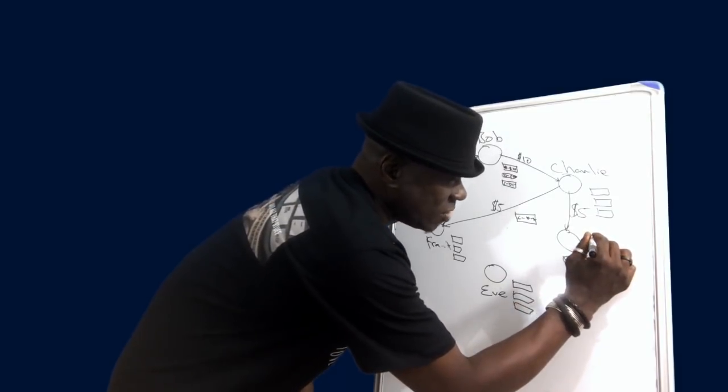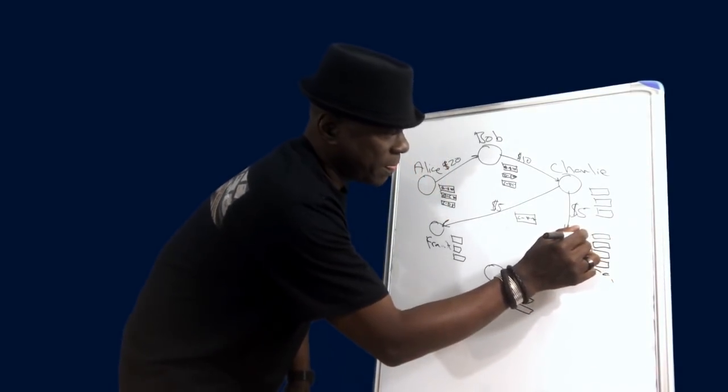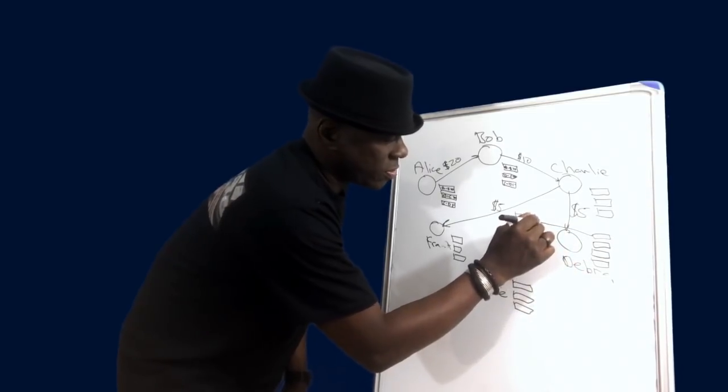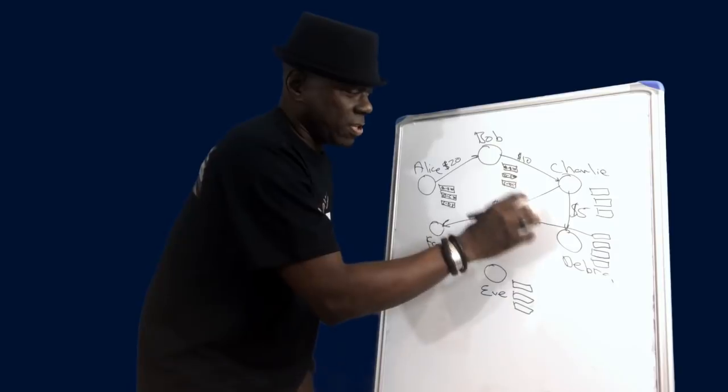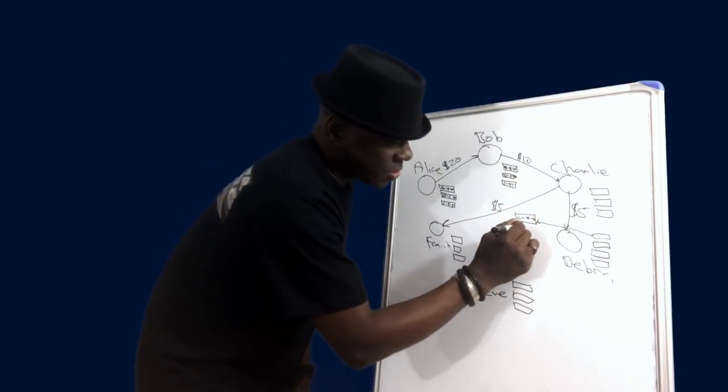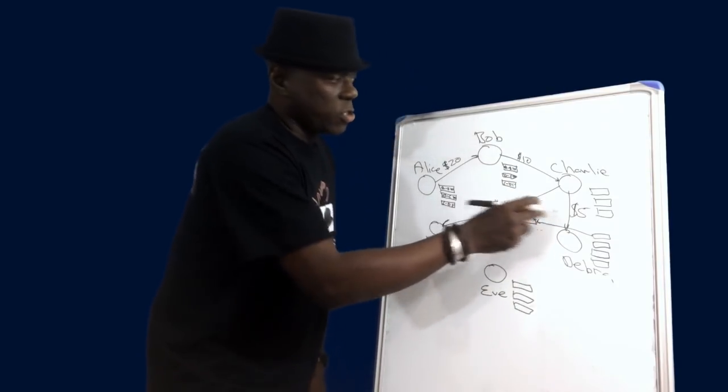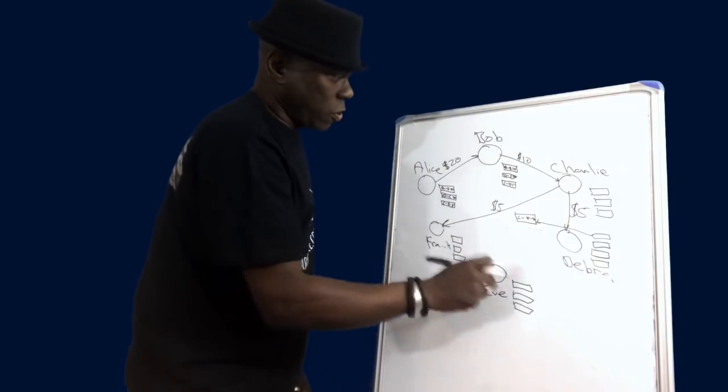Then running a lot of computational power, they will all try to generate random keys until they find the right key that enables them to write this transaction into the blockchain. So if Deborah is the one who finds that key, Deborah is then able to write that transaction into the block. She then broadcasts back to the network to let everyone know this transaction has been written into the blockchain and here is a special key that allows all the other nodes to write this transaction into the blockchain.